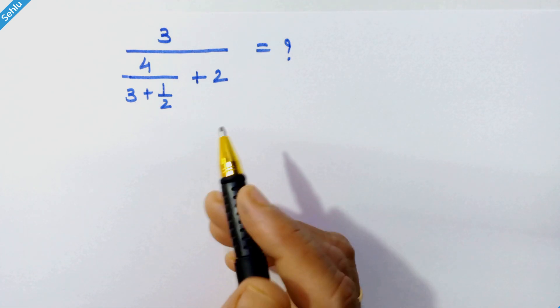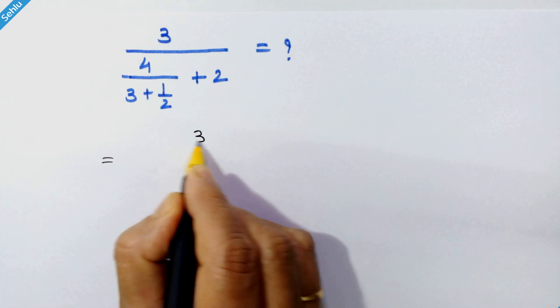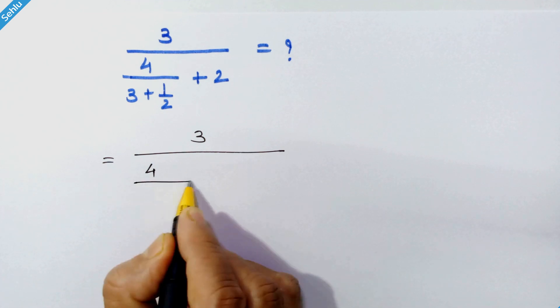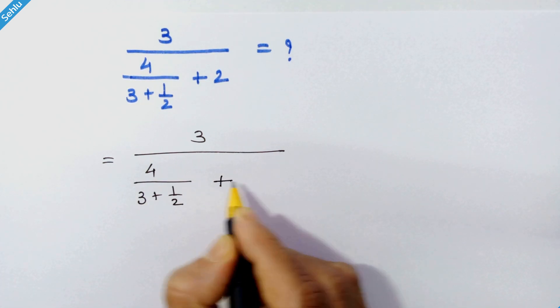So how do we do this? First let's rewrite this a little broader: 3 upon 4 upon 3 plus 1 upon 2 plus 2.